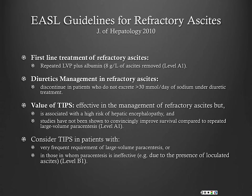To summarize the EASL guidelines on refractory ascites: repeat LVP plus albumin is first-line therapy. If urinary sodium excretion does not get above 30 mmol per day, you can probably stop diuretics because the patient is not going to be responsive, and you avoid the risks of azotemia and HRS.